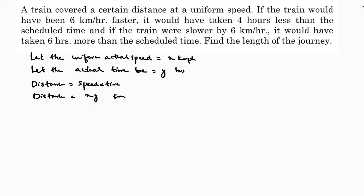Now, looking at the first condition: if the train would have been 6 km per hour faster, it would have taken 4 hours less. So for Case 1, distance equals speed into time: xy equals (x + 6) into (y - 4). Speed has been increased by 6, and time is reduced by 4 hours.